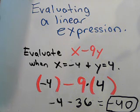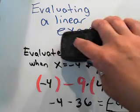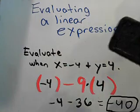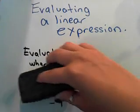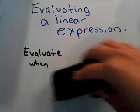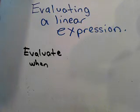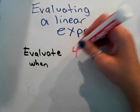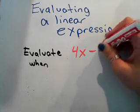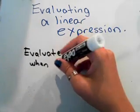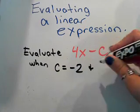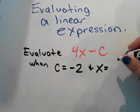Let's try another one. Let's try the expression 4x minus c. Anything can be a variable, it doesn't have to always be x and y. When c equals negative 2 and x equals 2.